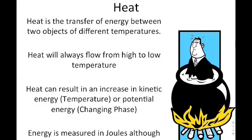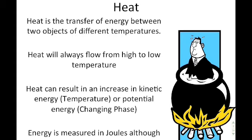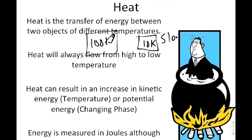Heat is the transfer of energy between two objects of different temperatures. For example, if you have something at 10 degrees Kelvin and something at 100 degrees Kelvin, there will be a transfer of energy. The molecules in the hotter object are moving much faster, and the system wants to reach equilibrium — the same average energy per particle — so those molecules collide and there is a flow of heat.